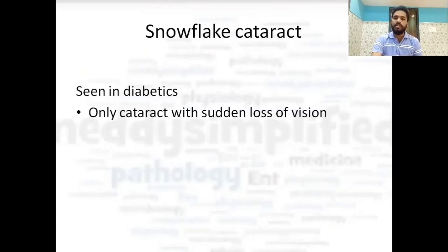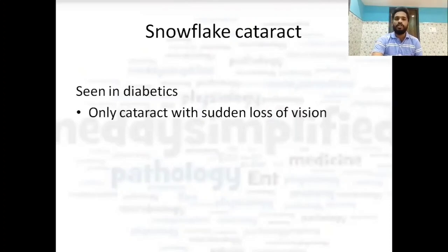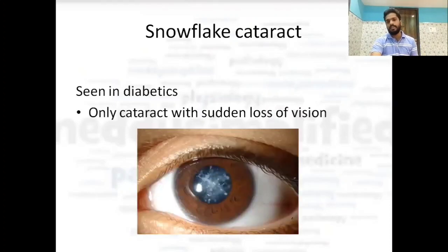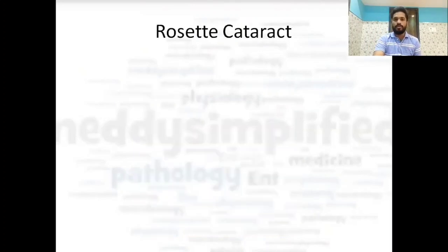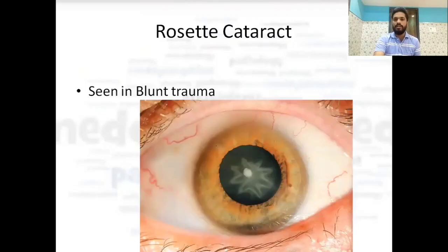Snowflake cataract is seen in diabetes. It is the only cataract with sudden loss of vision — usually cataracts are slow-growing with gradual vision loss, but the true diabetic cataract has sudden loss of vision. You can see the whitish snowdrop-like appearance. Rosette cataract is seen in blunt trauma.